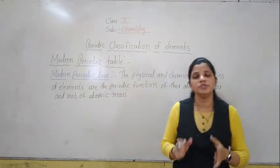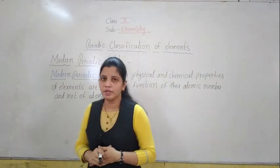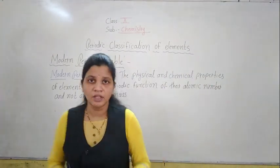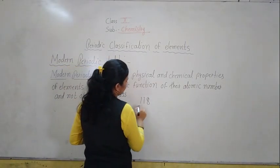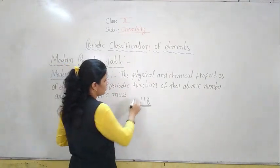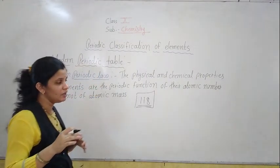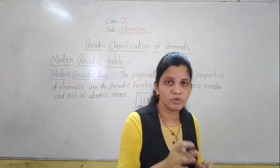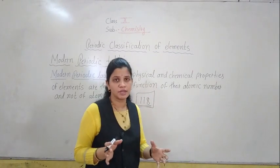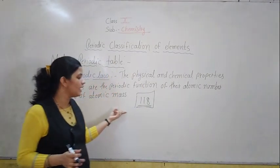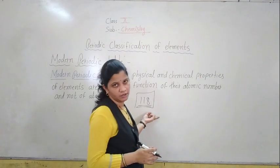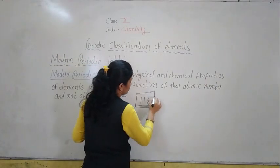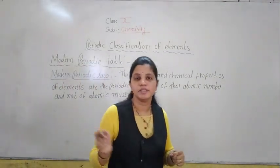Today we will start with the most important point, the Modern Periodic Table. To discover this — in the Modern Periodic Table, you know there are 118 elements. If you see your periodic table, there are a total of 118 elements. The scientist who worked on this is named Henry Moseley, and he placed all 118 elements in the Modern Periodic Table. Some other scientists helped him, but Henry Moseley placed all 118 elements in the Modern Periodic Table.